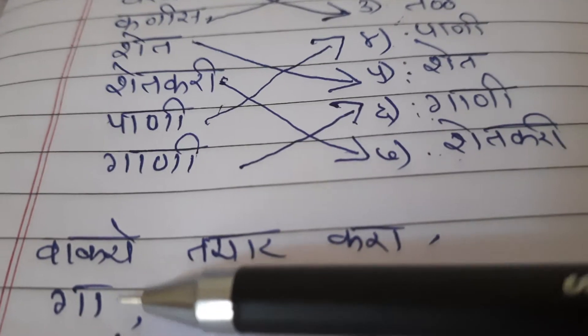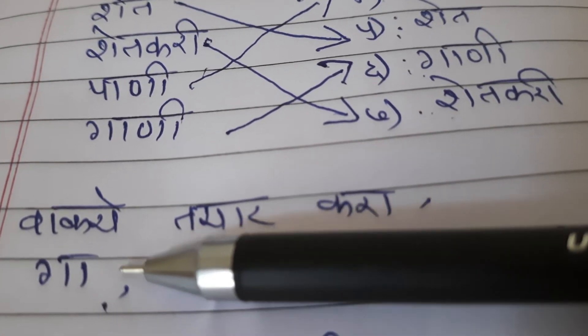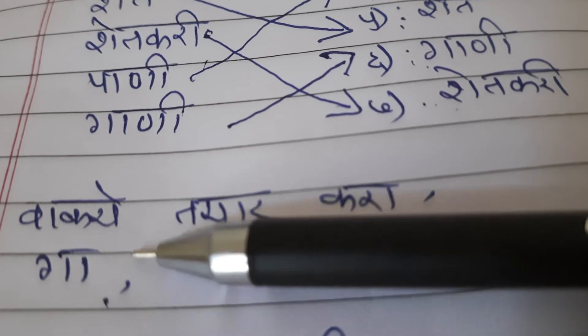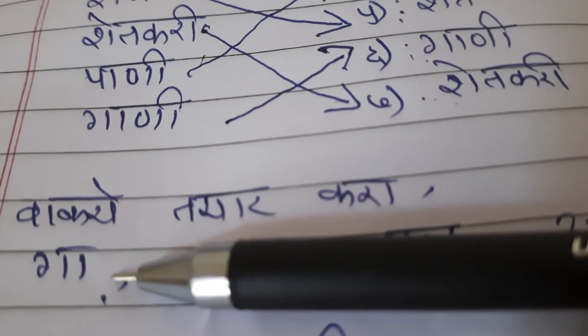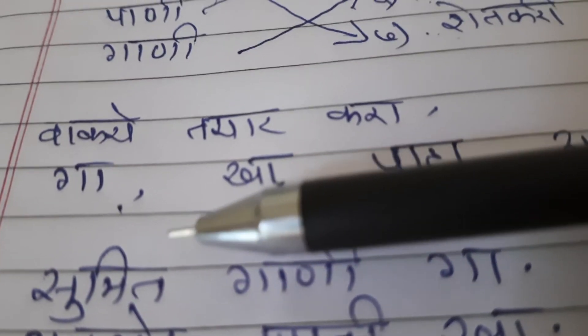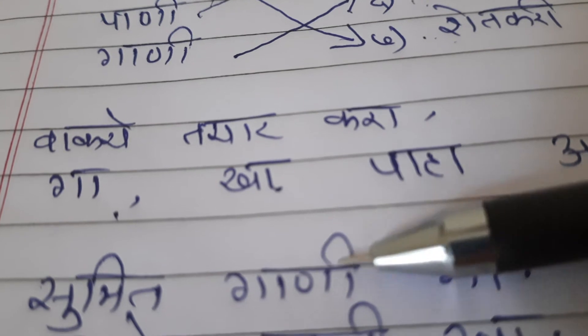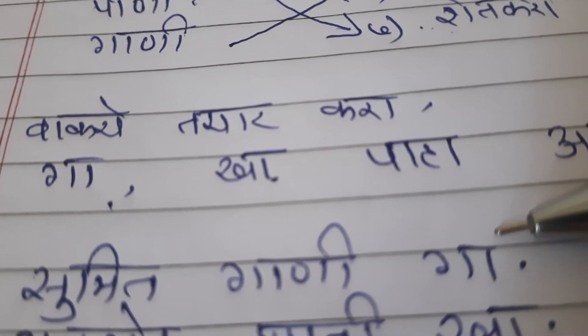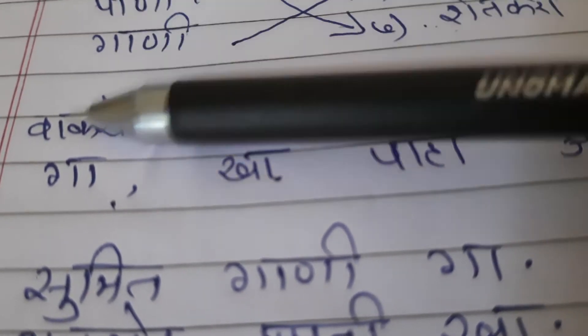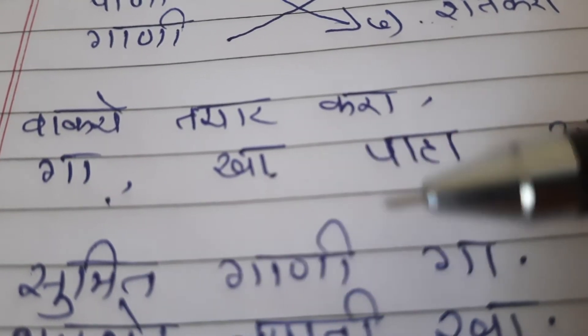Next, we have to prepare sentences with 'ga'. Ga means gaana. This is Marathi — we have to use 'ga'. So: Sumit, gaani, ga. We repeat: Sumit, gaani, ga.